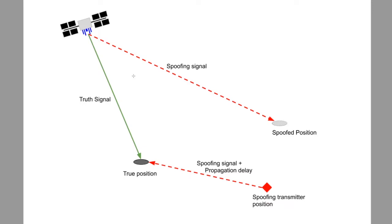You can configure multiple spoofers, which we would model as an additional red spoofing signal, but to keep things simple, we're going to limit our example to the single spoofer case. The spoofing transmitter position is the position that the spoof signal is being transmitted from. There is a built-in propagation delay and free space power loss calculation done between the spoofing transmitter and our true position.